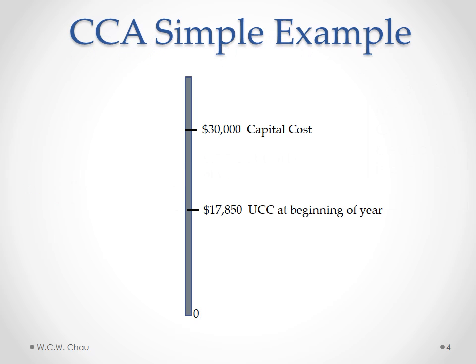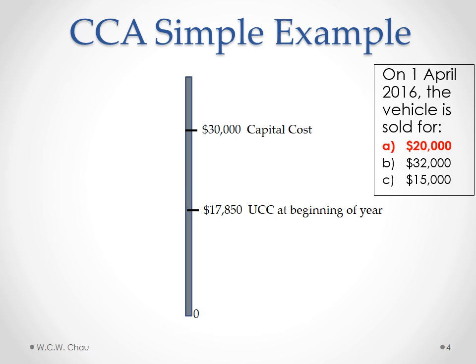We're now in the year 2016. Our beginning UCC balance is $17,850. In April of that year, the business has decided to sell the vehicle, and we'll be looking at three different scenarios for that sale. The first scenario is a sale price of $20,000. The second scenario is selling the car for $32,000. And the last is selling it for only $15,000.